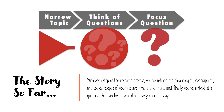For example, a specific text, a singular event, or a particular individual or group. Following in these methodological footsteps, with each step of the research process, you have refined the chronological, geographical, and topical scopes of your research more and more, until finally you have arrived at something specific enough to approach in a concrete, grounded manner. You've arrived at a question that can be definitively, conclusively addressed, and at a historical process that can be identified and known.